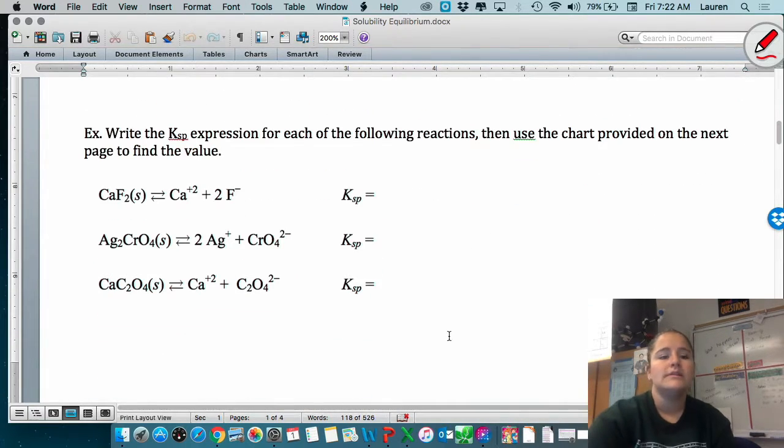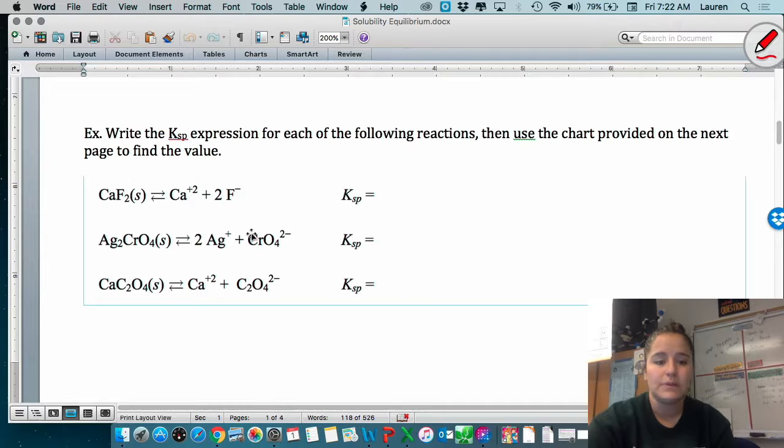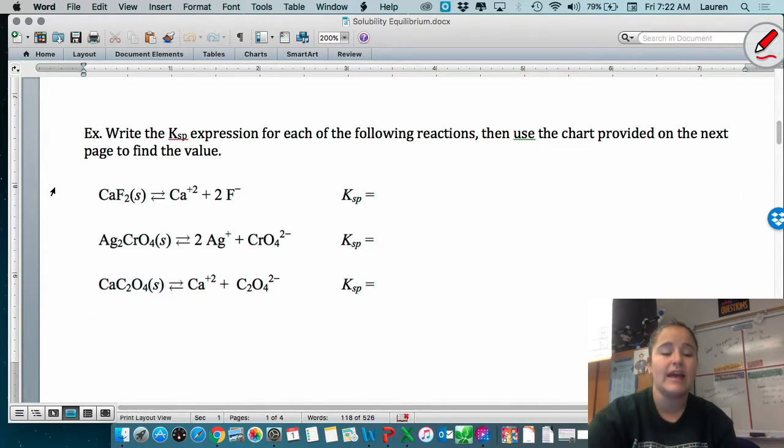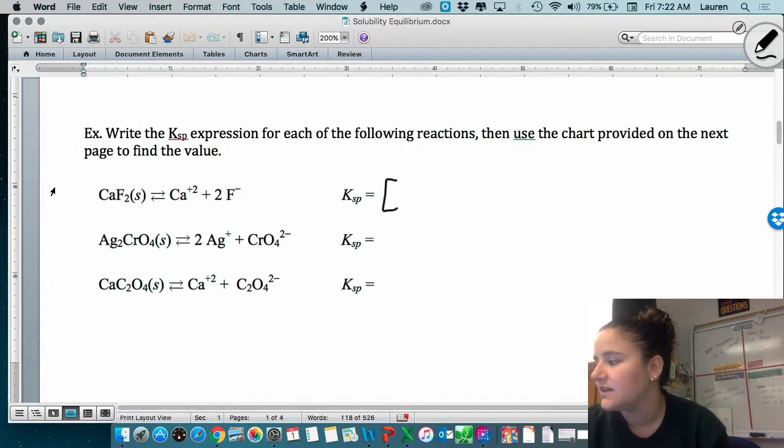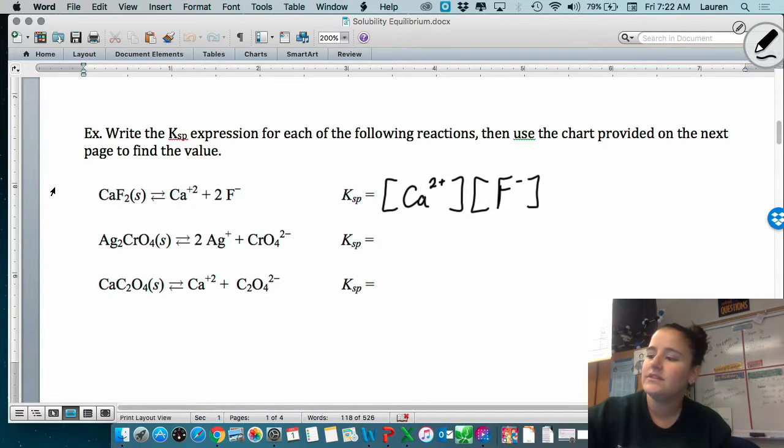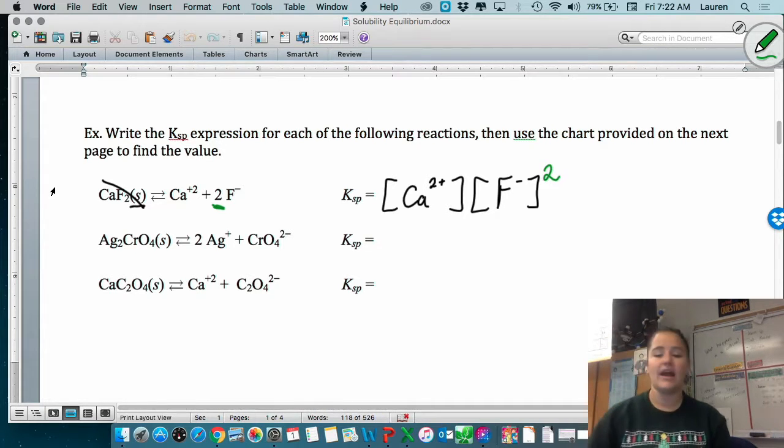Let me show you an example. Say we're writing the equilibrium expression for the dissolution of calcium fluoride into calcium ions and fluoride ions. We would put the concentration of those ions into brackets. So Ca2+ and F-. The solids don't get included, just the ions. And because we have two fluoride ions being produced, we take that and we add it here as an exponent.